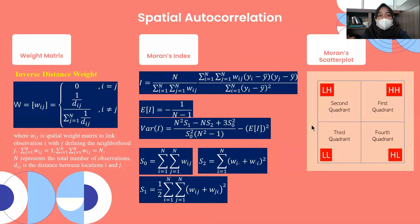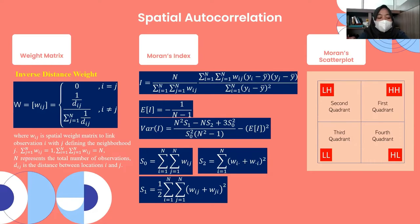The method section has three subsections: weight matrix, Moran Index, and Moran scatter plot. The weight matrix used in this research is the inverse distance weight. The principle of this calculation is based on the actual distance between locations. We compute the weight matrix based on the formula shown on screen.